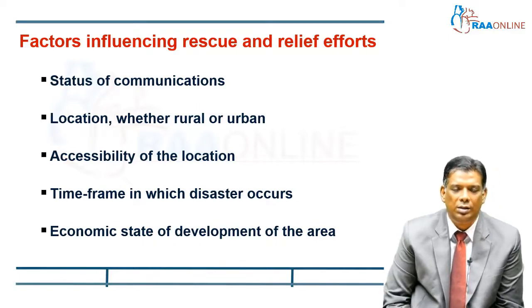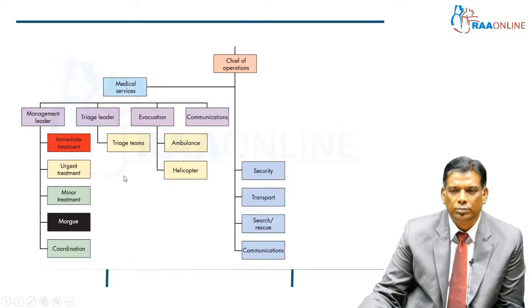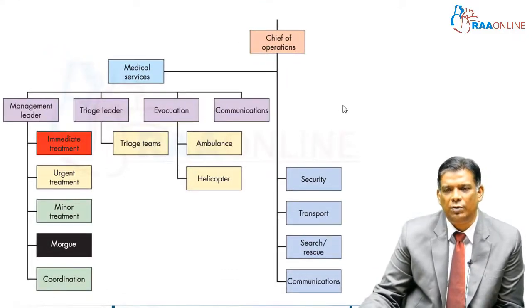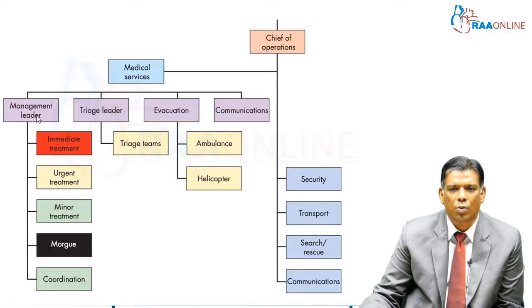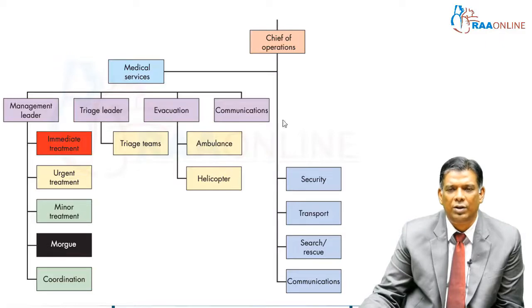The economic state of the area does play a role in the relief efforts. In a mass casualty incident, you have what is known as a chief of operations — usually the person who is at the administrative or operative head of the local hospital. Under him is the medical services, and below that we have the management leaders, triage leaders, evacuation team, and a communications team. The management leader decides on how the patient needs to be taken care of, based on what the triage teams do. Evacuation and communications fall under the local health authority, who will take care of these.